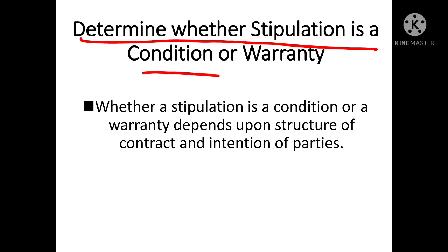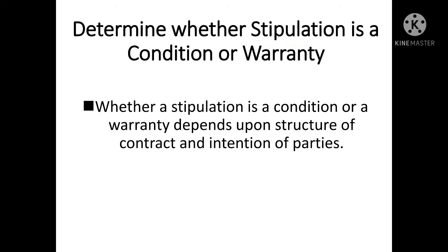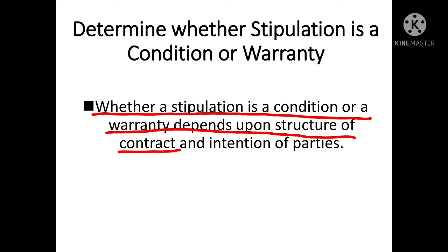अब question आता है: how to determine whether a stipulation is a condition or warranty? यह पता लगाने के लिए कि शर्त condition है या warranty - it depends upon the structure of the contract। जो parties हैं वो contract को कैसा structure कर रही हैं, और intention of parties क्या है। जैसे पहले case में Sohan ने specifically 50 km per hour बताया था तो वो condition थी, दूसरे case में सिर्फ 'अच्छा गोड़ा' बोला तो वो warranty थी।